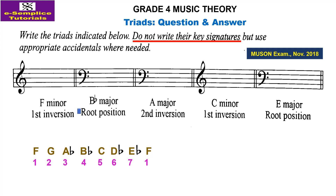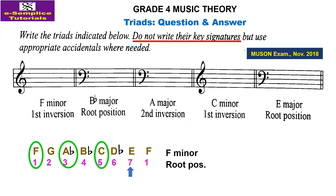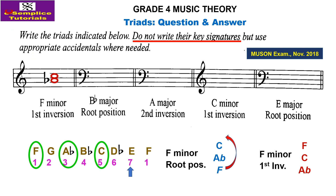Because this is a minor key, we need to raise the seventh note. Raising the seventh note means E flat loses its flat, becoming E natural. Now let's form the triad: F minor first inversion. F minor tonic triad in root position is F, A flat, C. First inversion means the root goes up, so first inversion becomes A flat, C, then F. Let's put those on the stave: A flat first, followed by C, and then F.